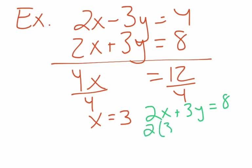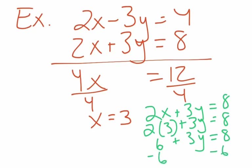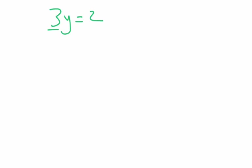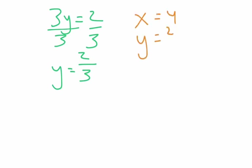From this point on, it's the same as the other problems we've done. Subtract six from both sides: three Y equals two. Divide both sides by three and Y equals two thirds. Leave it as a fraction — there's no reason to bust out your calculator. So my answer is X equals three, Y equals two thirds, or you can write it as your ordered pair.